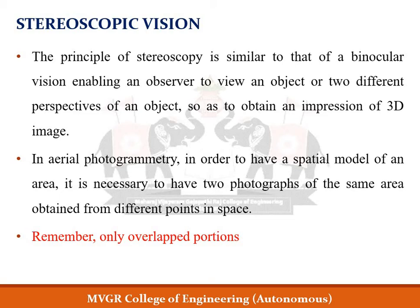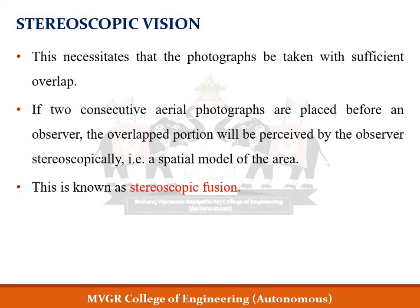The overlap of photographs is of great importance in stereoscopic vision. If two consecutive aerial photographs are placed before an observer, one photograph for each eye — the left photograph viewed only by the left eye and the right photograph viewed only by the right eye — then the overlapping portion between those two photographs will be perceived stereoscopically, giving a view of the spatial mode of that area. This is known as stereoscopic fusion.